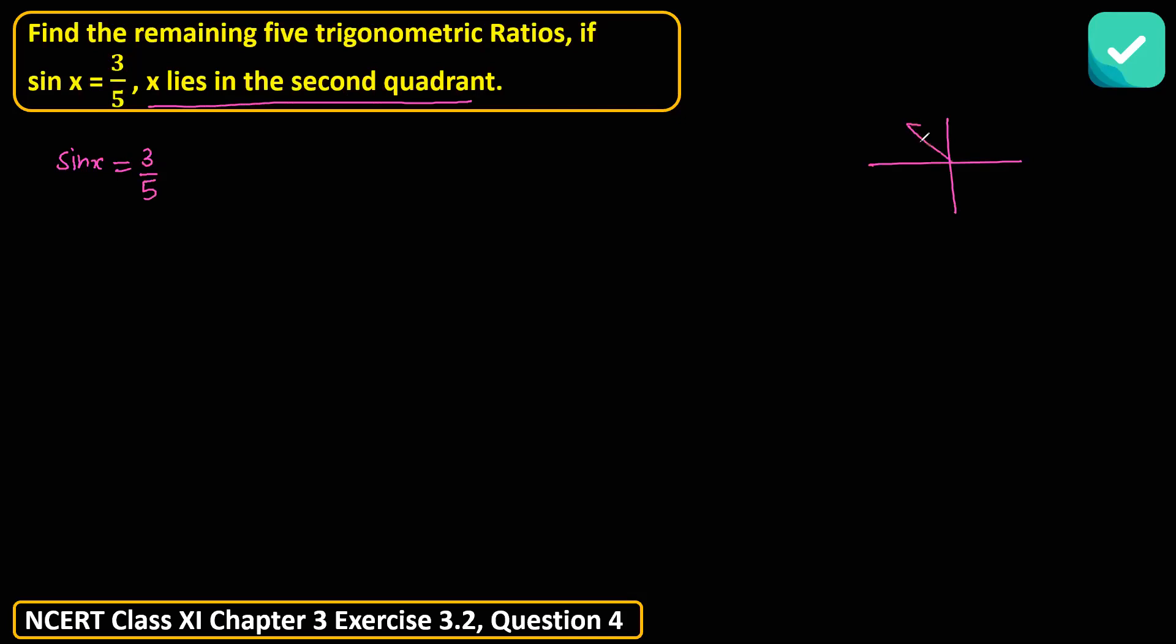What does it mean if x lies in the second quadrant? Sign or cos, the positive one, the remaining trigonometric ratios will be negative. Just for information: all positive, sign or cos positive, tan or cot positive, cos or sec positive.